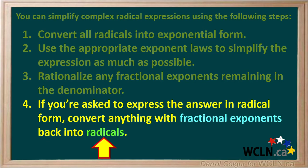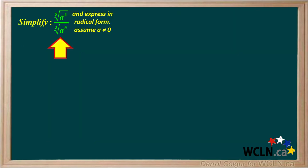Let's do an example. We're asked to simplify the expression the fifth root of a to the fourth divided by the cube root of a to the fifth, and express the answer in radical form. We assume that a is not equal to zero.